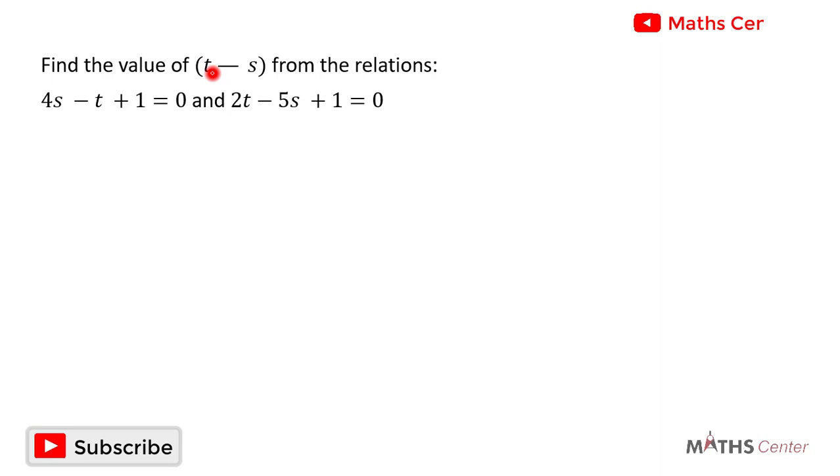Find the value of t minus x from the relations: 4x minus t plus 1 equals 0, and 2t minus 5x plus 1 equals 0.